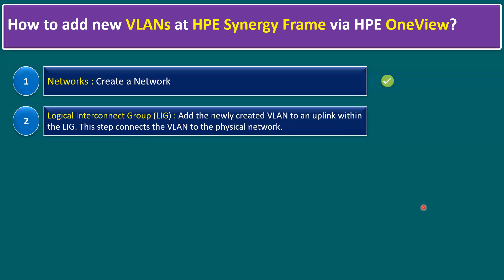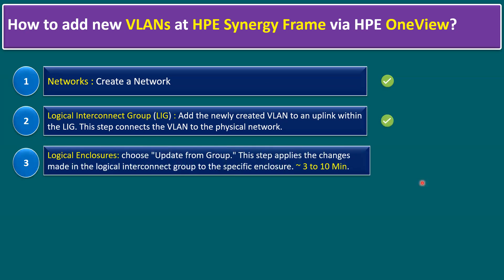Step two is now completed. Now the third step involves Logical Enclosures. Within Logical Enclosures we have to run the Update From Group option. This step applies the changes made in the Logical Interconnect Group to the specific enclosure. Running Update From Group typically takes approximately three to ten minutes.